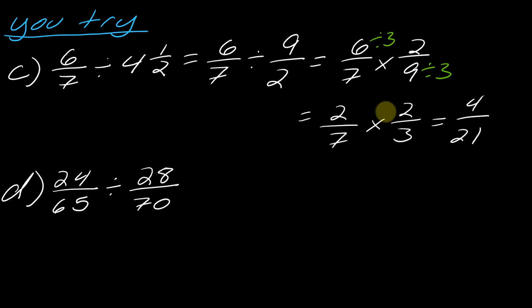Now, if you went a slightly different route, but ultimately got to 4 over 21, that's totally fine. And, again, that's something that I talk about in my multiplying fractions video, just how you can take a couple different routes to get to the same answer. So, as long as you're getting to 4 over 21, you're good to go.